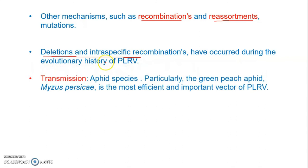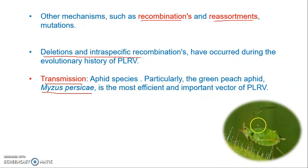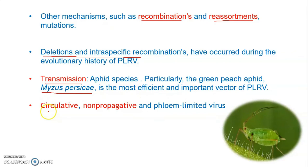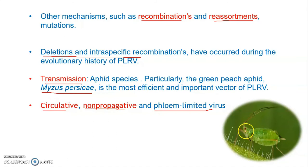Potato Leaf Roll Virus is transmitted by about 10 aphid species, of which Myzus persicae is the most efficient and important vector. The virus is circulative non-propagative — when the aphid feeds on the virus, it does not replicate or multiply inside the aphid. The virus is also phloem-limited, circulating from the phloem through the aphid's midgut to the salivary gland before being transmitted.